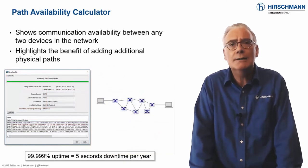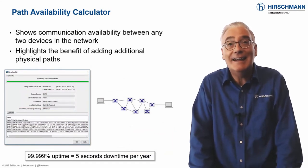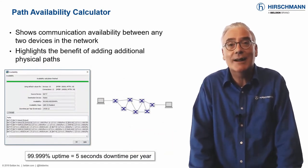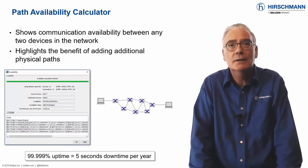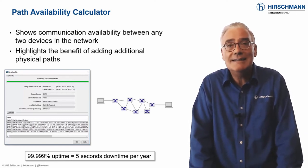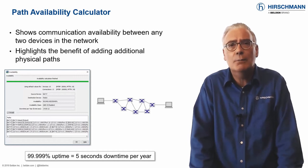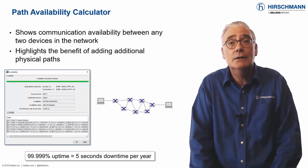How often have you heard the expression 'five nines availability'? In other words, 99.999% uptime, or 5 seconds a year downtime. This is the de facto standard for OT networks. Easy to say, massively complex to calculate. Industrial HiVision includes a path availability calculator. To be clear, the tool cannot calculate the availability of a network.